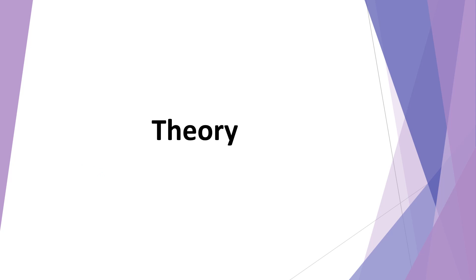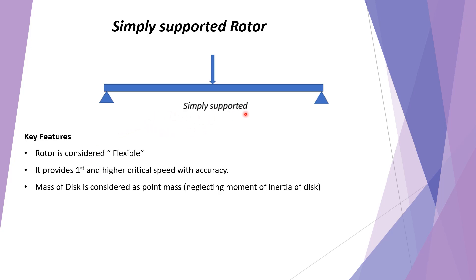Now for the theory part. This is a simply supported rotor where bearings are at both ends and the shaft is supported in between. The bearings are rigid, so the rotor is considered flexible. There is no displacement of the shaft at the two bearings; however, there will be displacement at intermediate locations along the shaft. This will give multiple critical speeds with more accuracy.